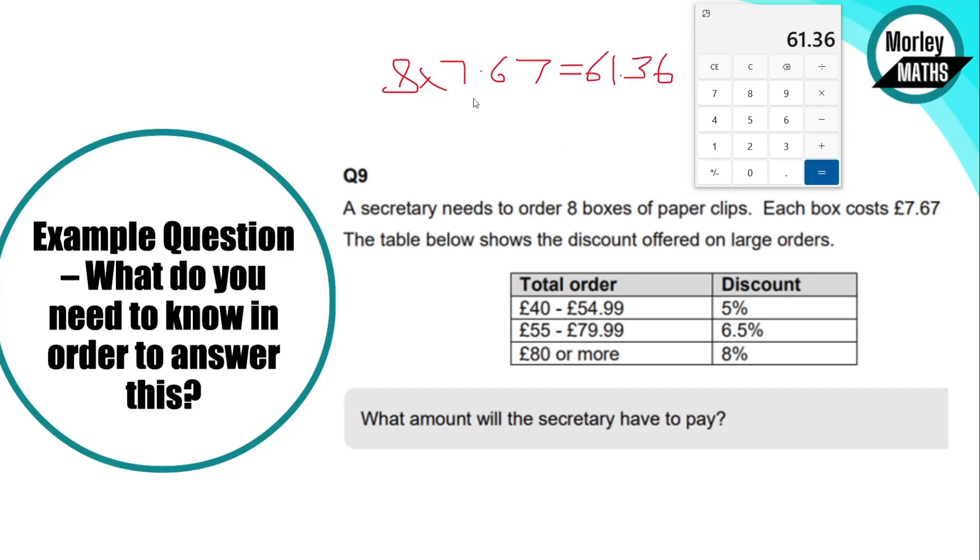So £61.36. We can look at the table—this is where our information regarding the percentage discount is going to be. It's what we're going to be taking off. We can actually see we're within this middle bracket here, £55 to £79.99, so we're going to have a 6.5% discount. So we need to take off 6.5% of that. So if we times that by 0.065...